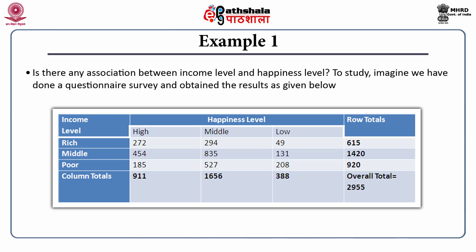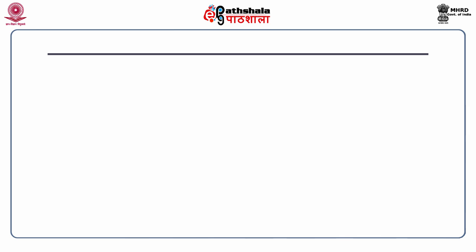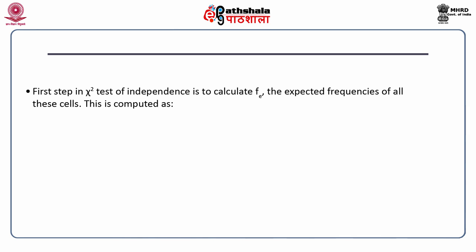The first step in the chi-square test is to find the row totals and column totals by summing in both directions. For example, amongst the rich income level, high plus middle plus low equals 615. Similarly, you calculate all row totals, column totals, and finally the overall total, which is 2955. Then you calculate the expected frequency FE for each cell.